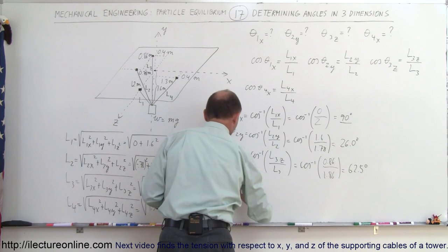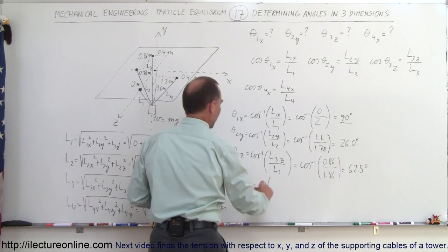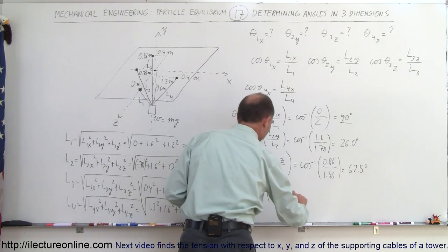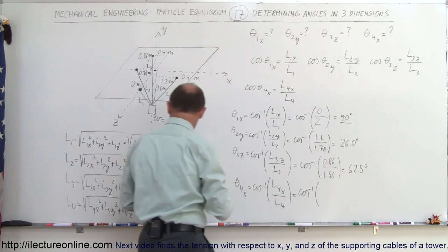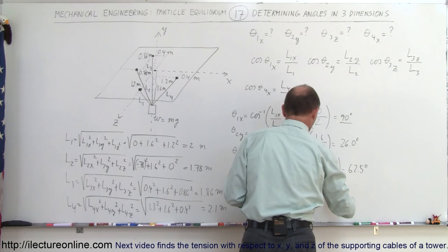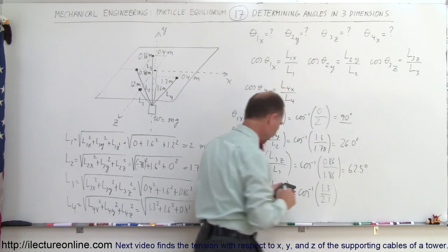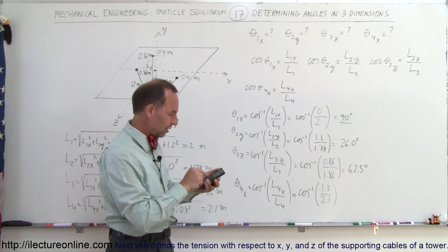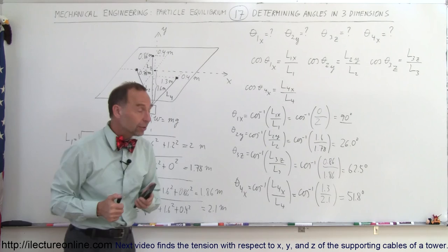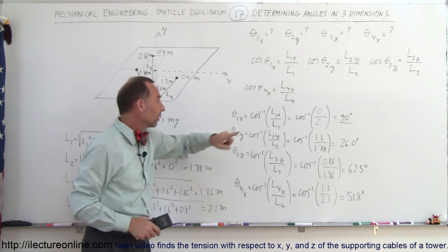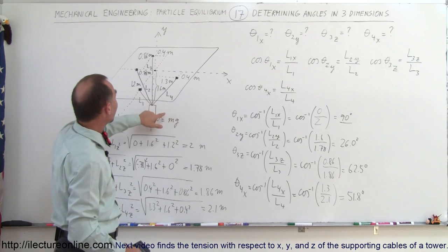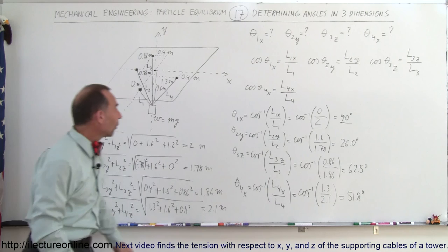Finally, for the angle of L4 relative to the x-axis, we take the arccos of L4 in the x-direction divided by L4. L4 is 1.3 meters away from the origin in the x-direction, and the magnitude of L4 is 2.1 meters. So 1.3 divided by 2.1, taking the arccos, gives 51.8 degrees. To summarize: L1 makes 90 degrees with the x-axis, L2 makes 26 degrees with the y-axis, L3 makes 62.5 degrees with the z-axis, and L4 makes 51.8 degrees with the x-axis.